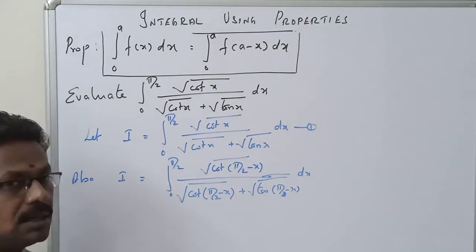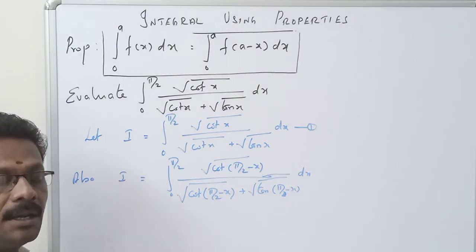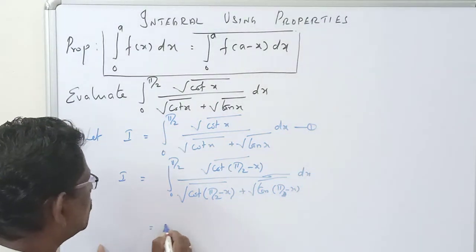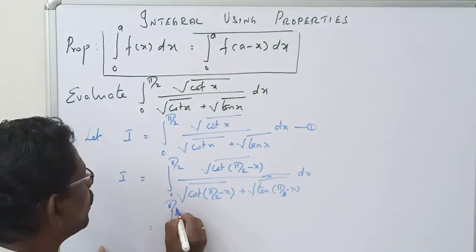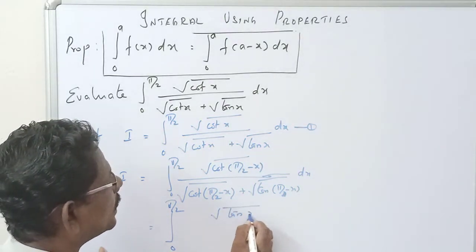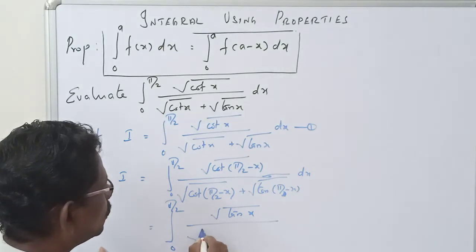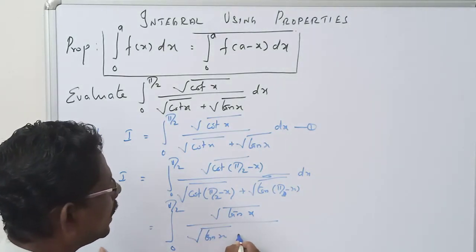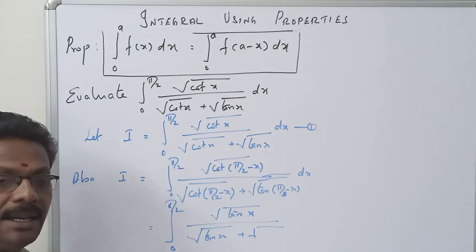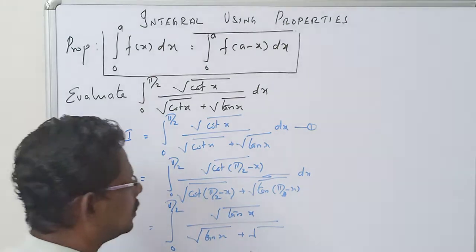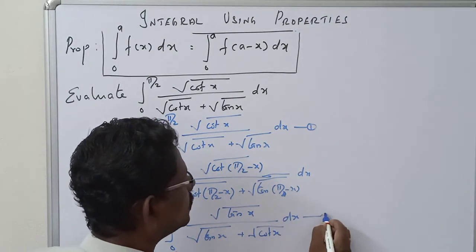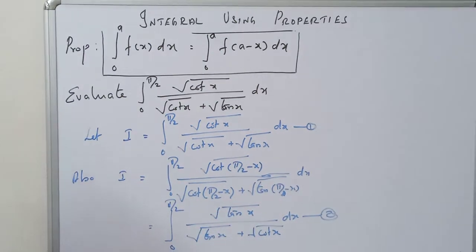Now, what is cot(90° − θ)? Cot(90° − θ) equals tan θ. So the expression becomes the integral from 0 to π/2 of √(tan x) divided by √(tan x) plus √(cot x) dx. This is equation number 2.